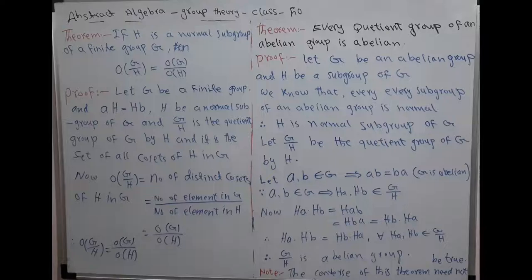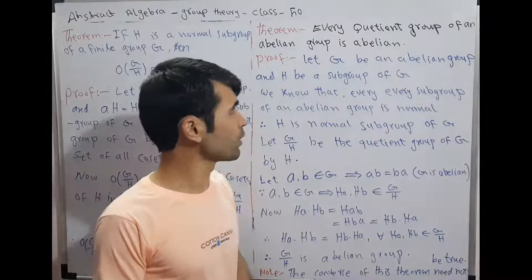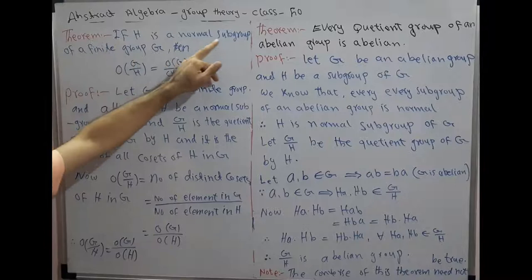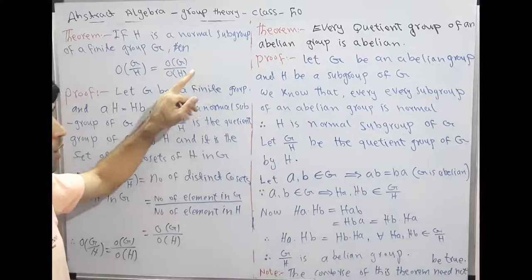Hello friend, welcome to the abstract algebra class. It is class 50. In this class, we will prove a theorem. First theorem: if H is a normal subgroup of a finite group G, then the order of the quotient group G by H is equal to the order of G divided by the order of H.